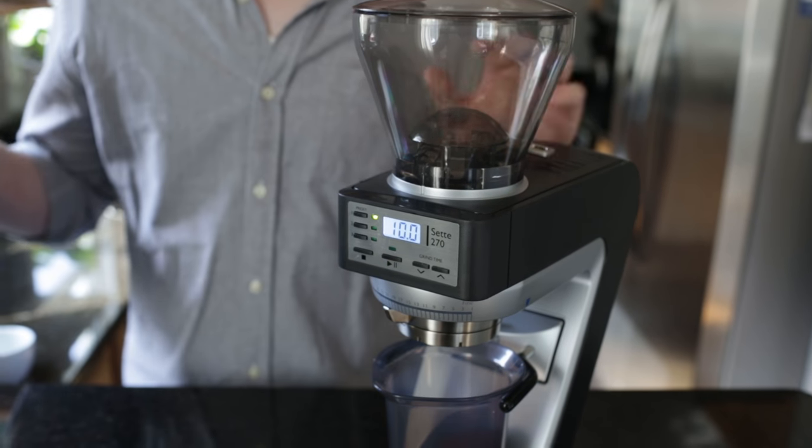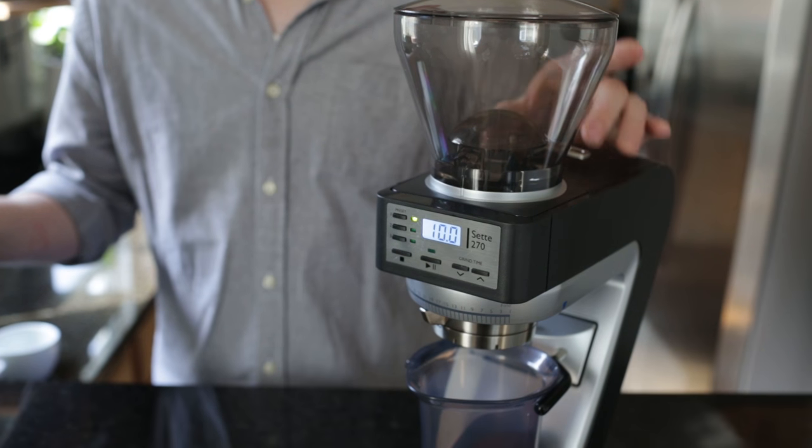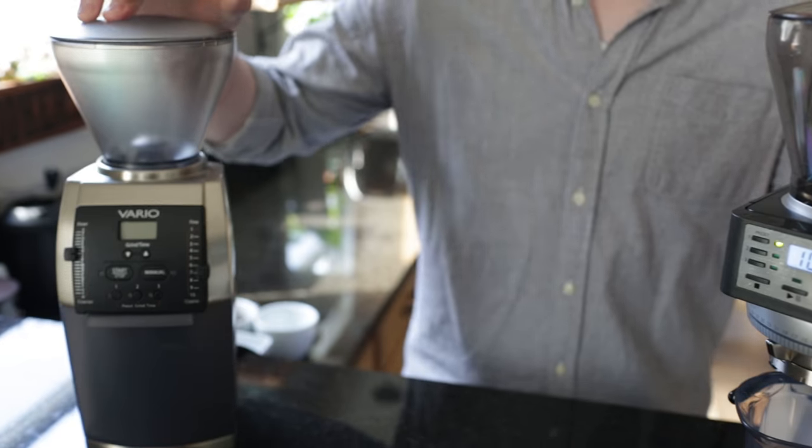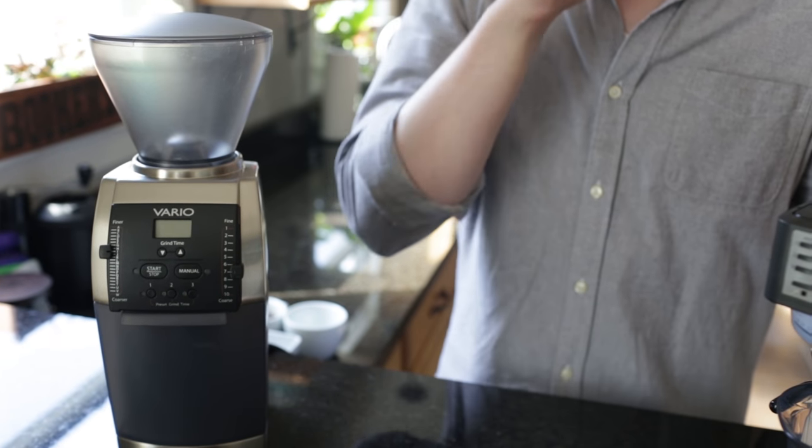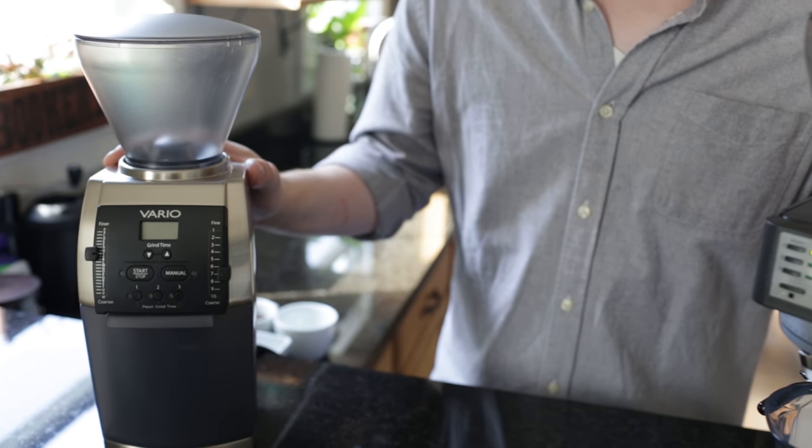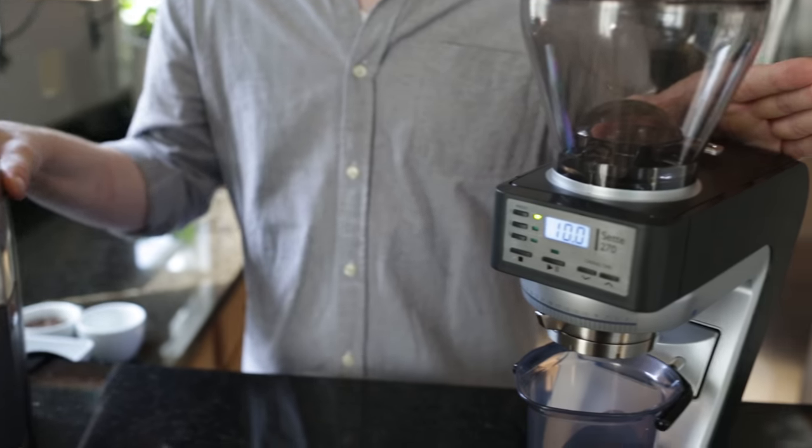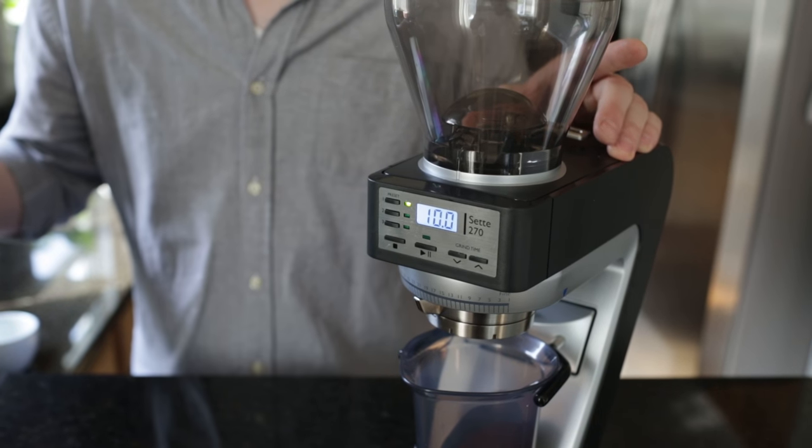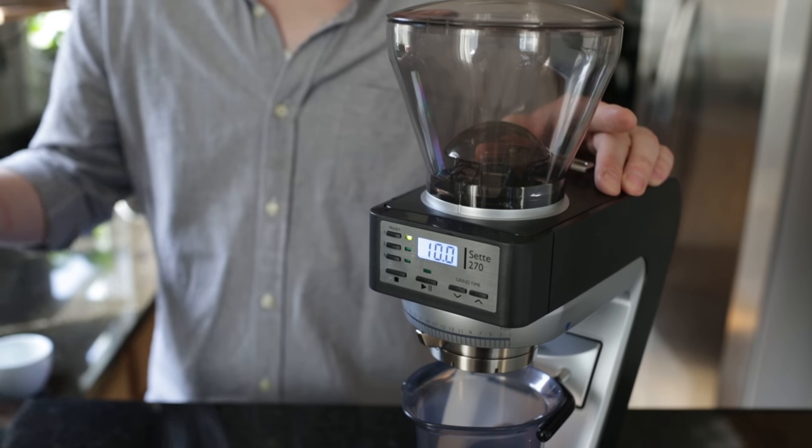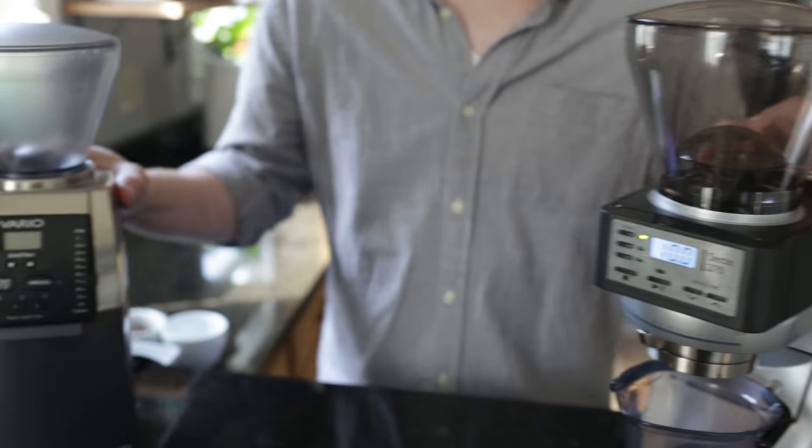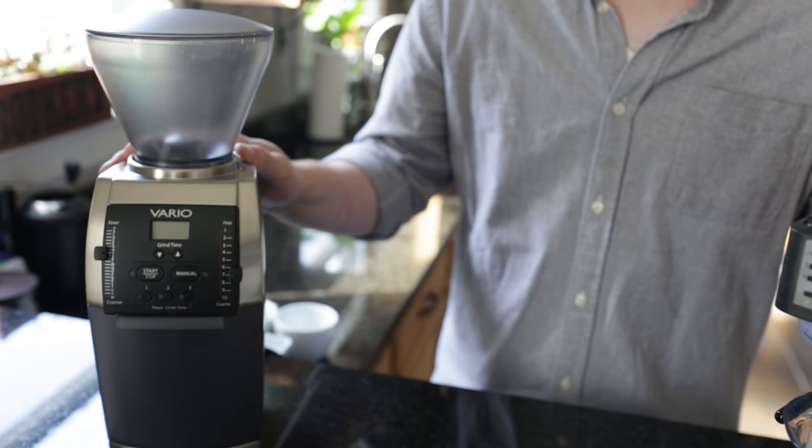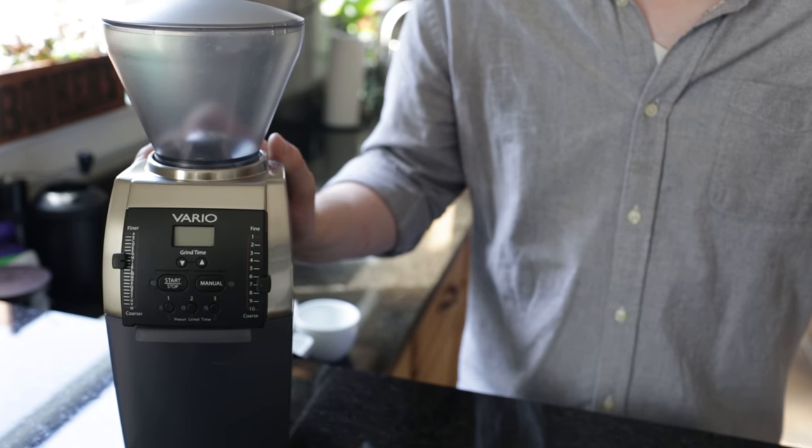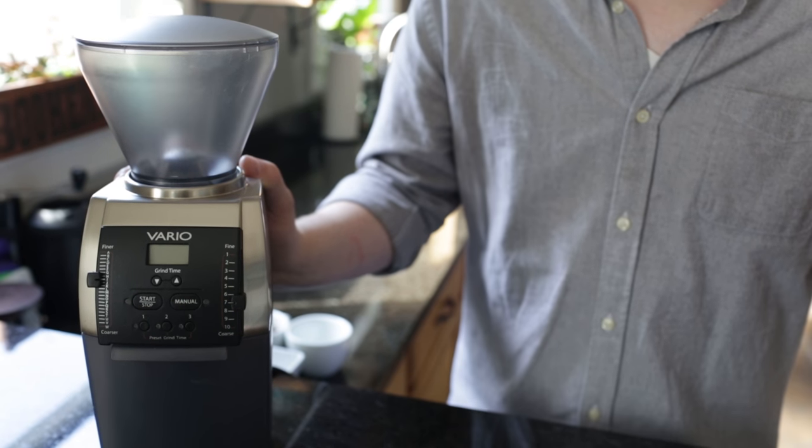So when you compare the two, if you were to use the Sette out of the box and the Vario with steel burrs, which are a $50 additional upgrade, the flavor is similarly good. It's a similar quality in the espresso range. The Vario, I think, takes the edge in terms of brewing flavor quality when you're doing, say, Kalita Wave or even Chemex brews. V60s are pretty comparable between the two.